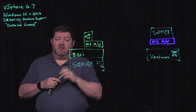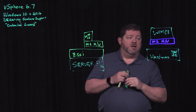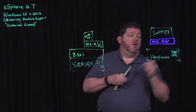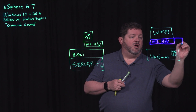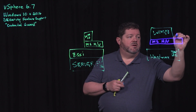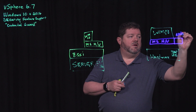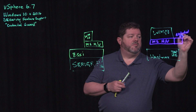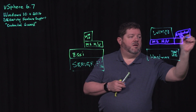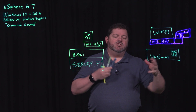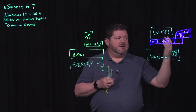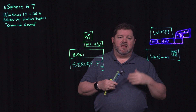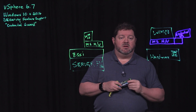Now, just like in the physical world, when I enable virtualization-based security, what also boots on the Windows hypervisor is the credential subsystem. You might want to consider that as using virtualization to isolate the credential subsystem from Windows 10. That solves the pass the hash exploit.